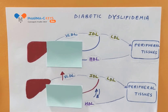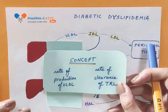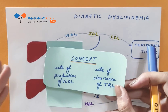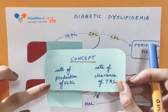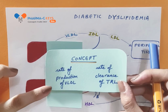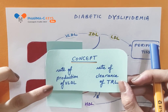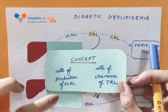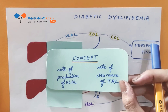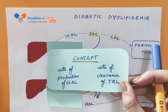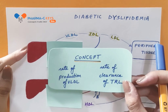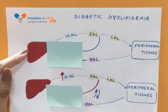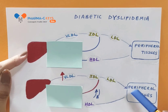So, the major concept to make it very easy and clear to understand diabetic dyslipidemia is the rate of production of VLDL and the rate of clearance of triglyceride-rich lipoproteins. We will see how these two are affected in the normal scenario or in diabetic dyslipidemia.